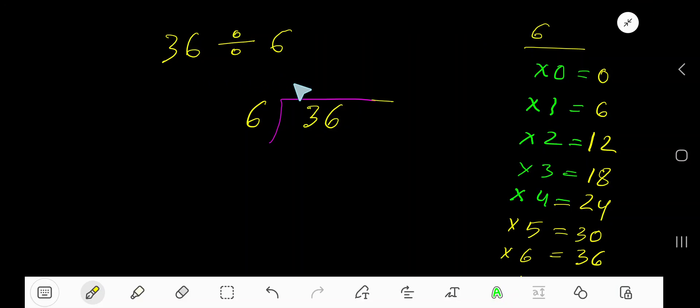36 divided by 6. Here 6 is a divisor, so we need the multiplication table of 6. 6 times 0 is 0, 6 times 1 is 6, 6 times 2 is 12, 6 times 3 is 18. To find out the multiplication table of 6 easily...